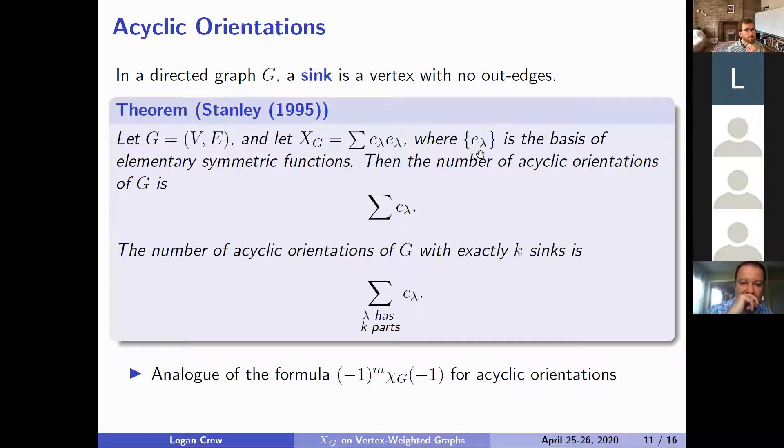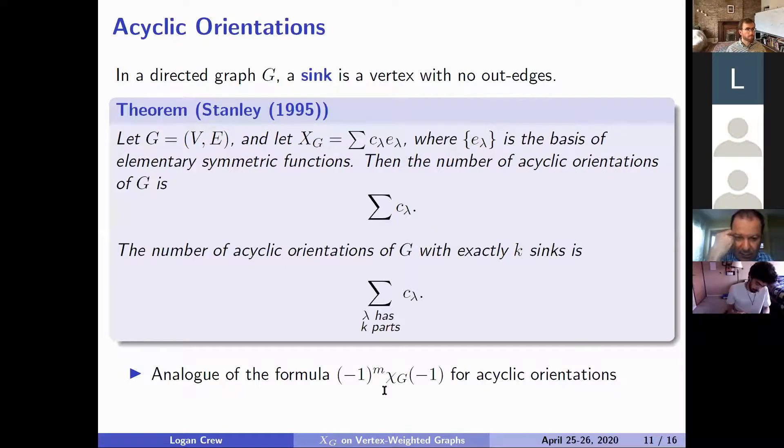So e_λ's are one of the basis of bases of symmetric functions. I won't define them here but they're fairly straightforward. But the point is that we can write any symmetric function uniquely as a sum of the... of a linear combination of these e_λ's. If you do this then Stanley showed that the number of acyclic orientations of G is the sum of those coefficients. And this is in some sense just a generalization of this formula for the chromatic polynomial which is also well known.